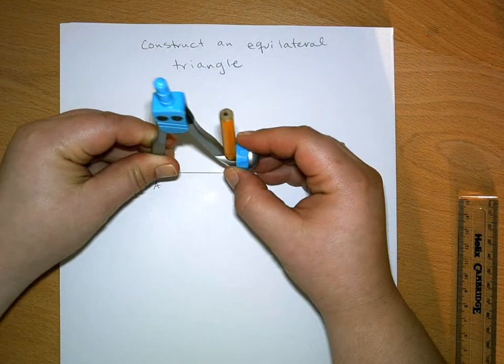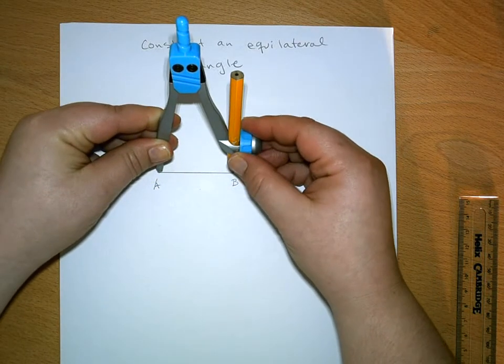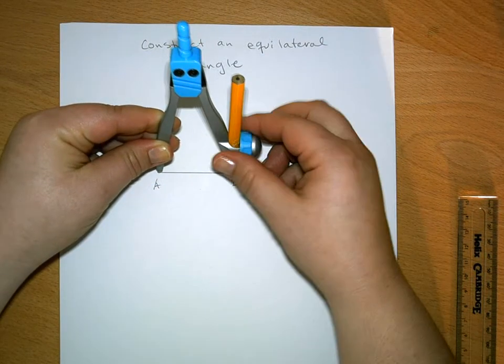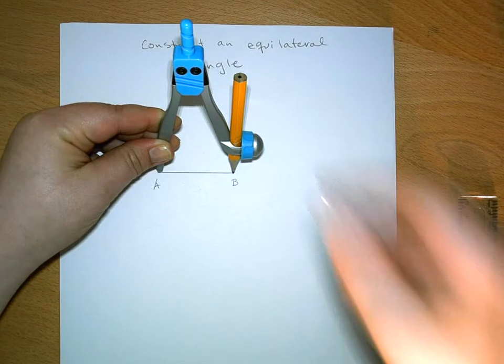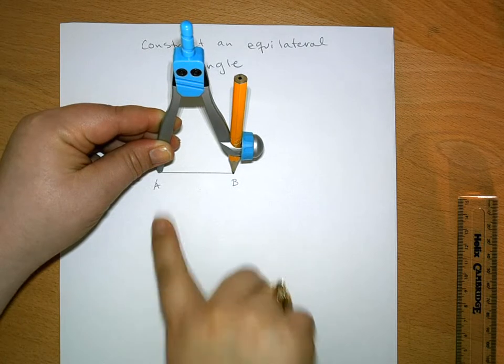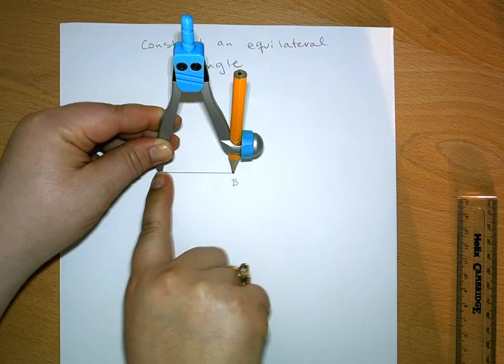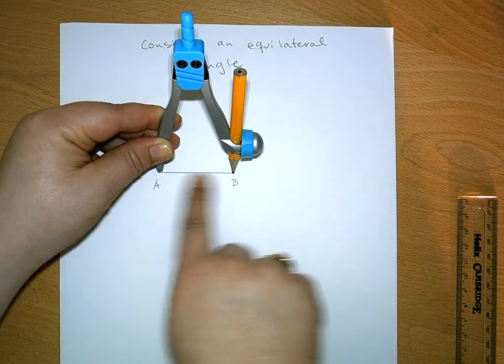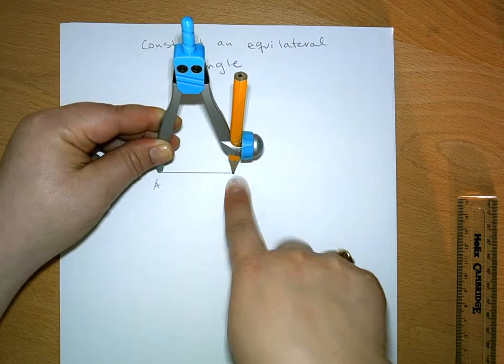So we want to start out doing this construction by making our radius of our compass to be the same as the length of the segment. And when I say radius of the compass, I mean the space between the point of the compass, the metal point, and the pencil. That's what I mean by radius.